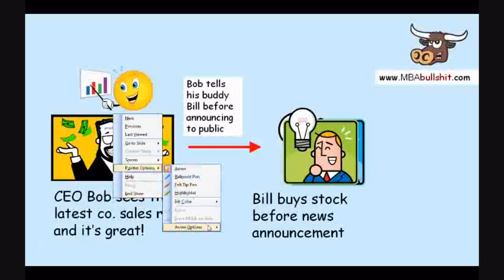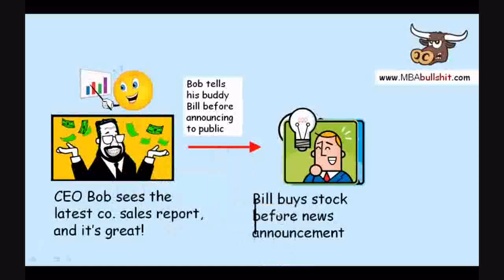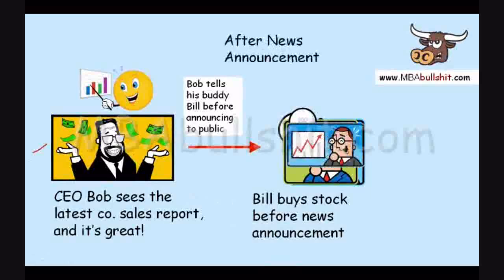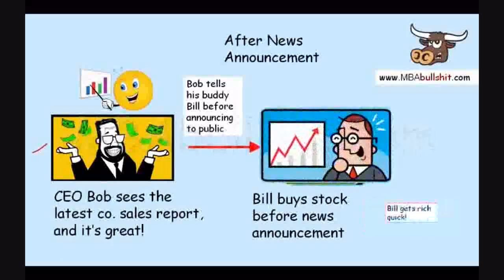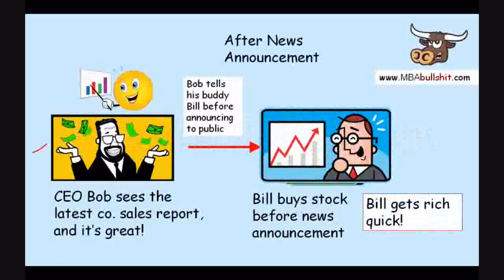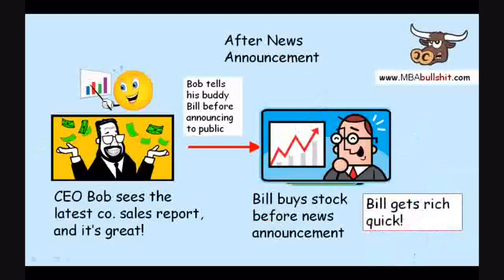Bill buys the share of stock before this great sales report is made public. Then Bob decides to announce it to the public, and after the news announcement the share price goes up. What happens to Bill? Bill gets rich quick — because he bought the stock before the news announcement, and then the news came out and his share price went up. So that's one way people can earn money by trading the news.